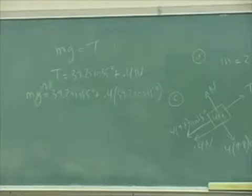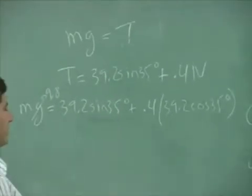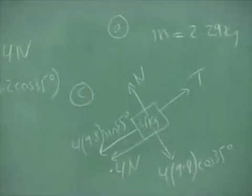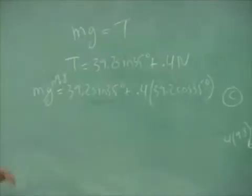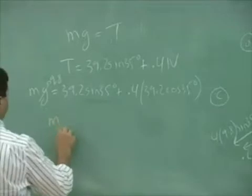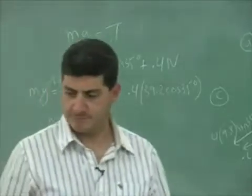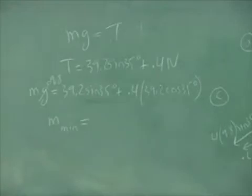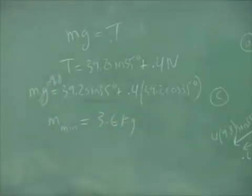That will tell you what the minimum mass is for the system to move up the incline. You're going to have to beat the downward component of the weight of the 4 kilogram block, and you're going to have to beat the friction. So you need a minimum of 3.6 kilograms, even just to get the system moving.